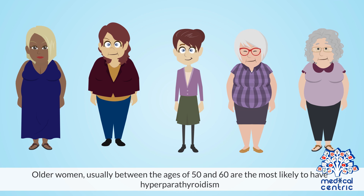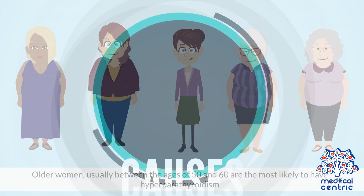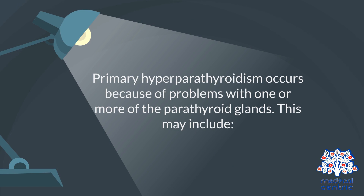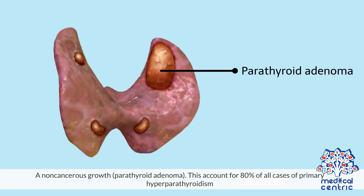Older women, usually between the ages of 50 and 60, are the most likely to have hyperparathyroidism. Primary hyperparathyroidism occurs because of problems with one or more of the parathyroid glands. This may include a non-cancerous growth, or parathyroid adenoma, which accounts for 80% of all cases of primary hyperparathyroidism.